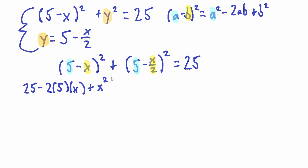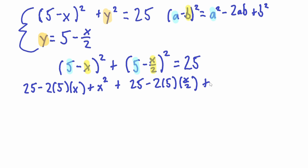Now applying the same binomial formula to the second term, where a equals 5 and b equals x over 2: a squared is 25, minus 2 times 5 times x over 2 is minus 5x, plus b squared. Squaring a fraction means squaring the numerator and denominator, so (x over 2) squared equals x squared over 4. So plus x squared over 4.